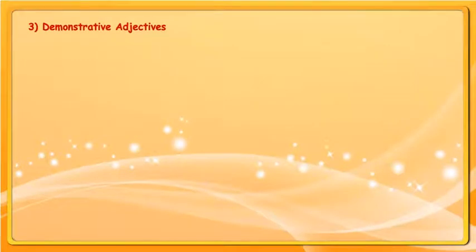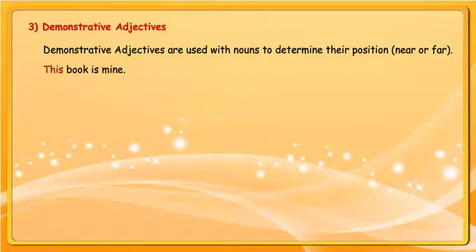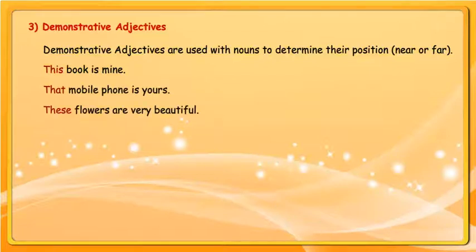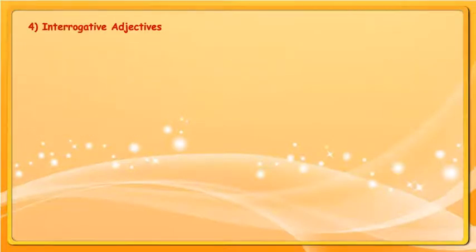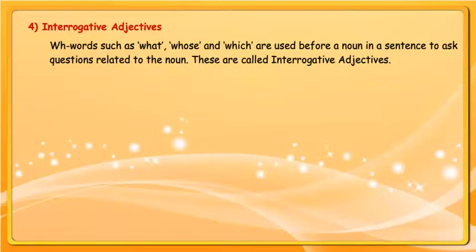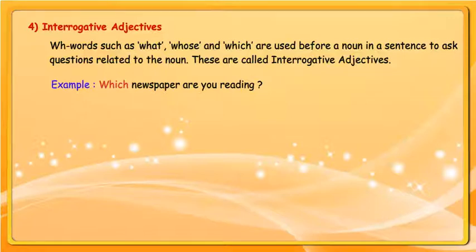Demonstrative adjectives are used with nouns to determine their position — near or far. Examples: This book is mine. That mobile phone is yours. These flowers are very beautiful. Those pens are yours. Interrogative adjectives: W-H words such as what, whose, and which are used before a noun in a sentence to ask questions related to the noun. These are called interrogative adjectives. Example: Which newspaper are you reading? Whose house is that?